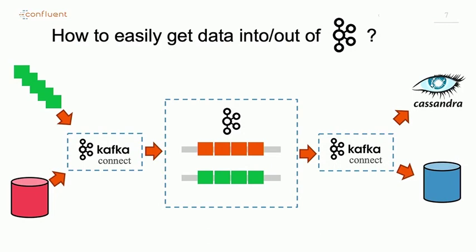An architecture might look something like this. We have connectors on the left side — going to the relational database, getting the change log and publishing that as events. It could be a JDBC client doing a query, or an MQTT connector reading IoT events. Connect is this framework that allows you to get data in and out of Kafka from and to different destinations. There is a DataStax connector that lets you land the data in Cassandra directly without writing any code — you can map your topic in Kafka directly to tables in Cassandra, deploy this configuration to a worker, and it will transform the data format from JSON or Avro into the proper CQL model to write into Cassandra.